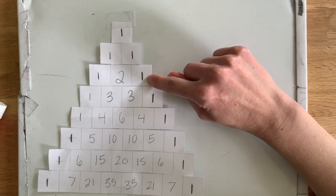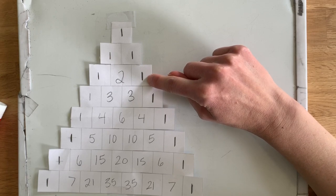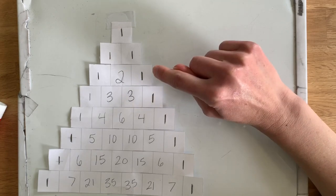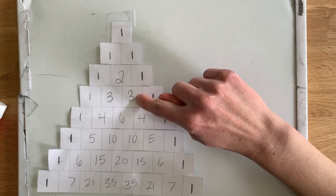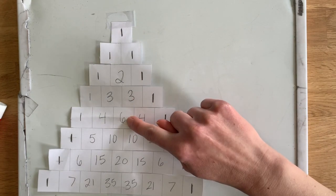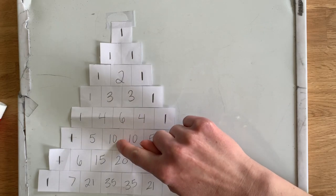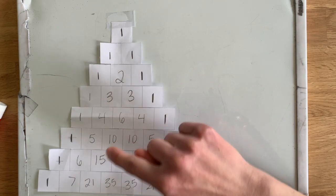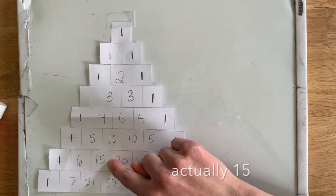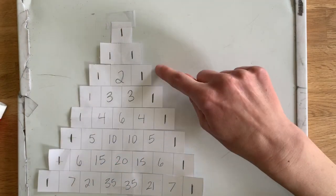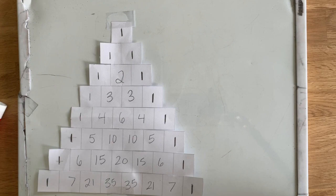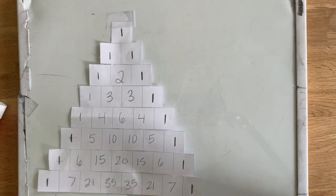Here we have our triangular numbers. So we have one plus two is three, three plus three is six, six plus four is ten, ten plus five is fifteen, fifteen plus six is twenty-one and so on. So every time we were adding on to a new square we're adding a number higher.